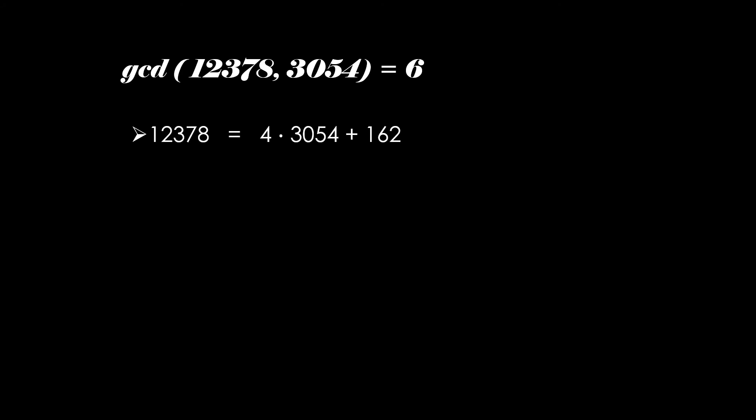So out of these two, 12,378 can be written in terms of 3,054 as four 3,054s plus a remainder of 162. Again, if we write 3,054 in terms of 162, we'll have 18 162s plus a remainder 138.